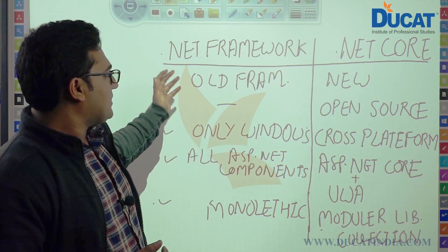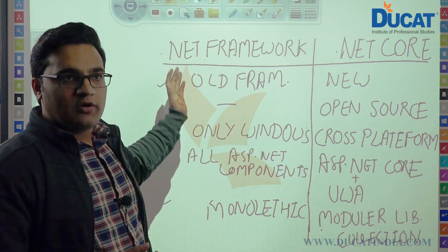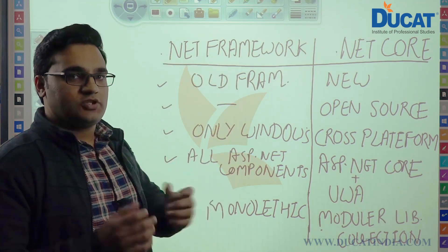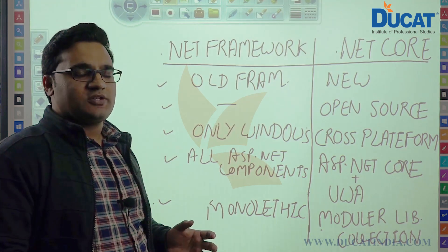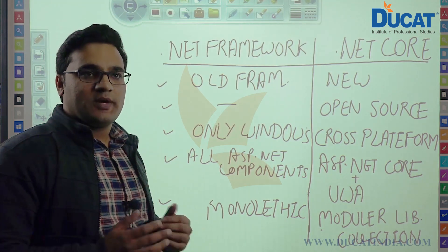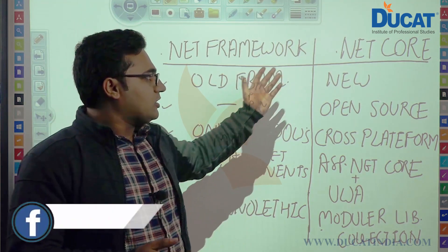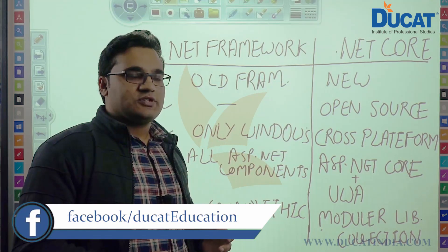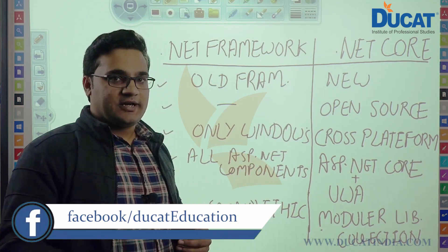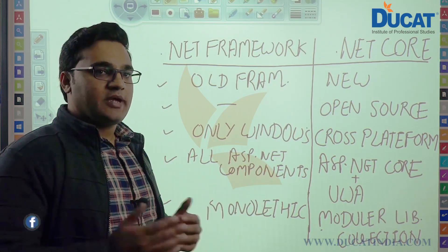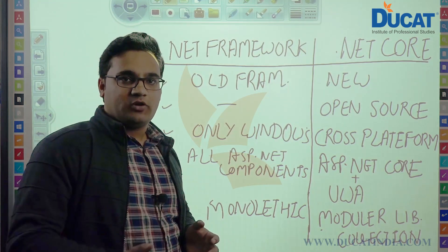The main difference between these two is that .NET Framework is an old framework which is mature enough and many applications have been built in it. .NET Core is a new framework which is rebuilt, recreated and maintained by Microsoft and the .NET community on GitHub.